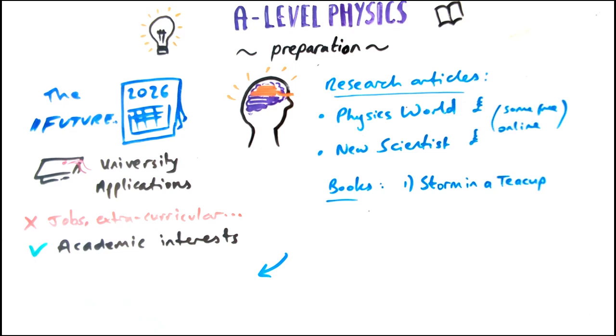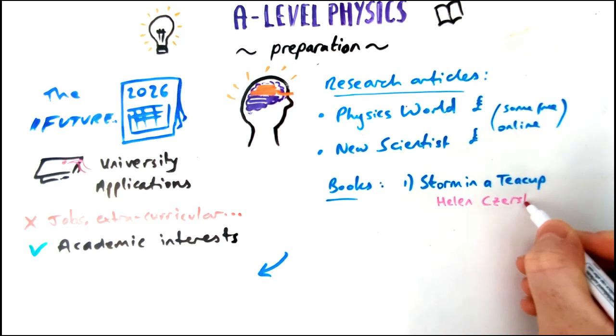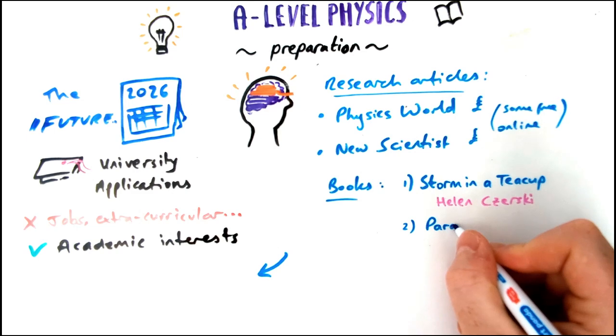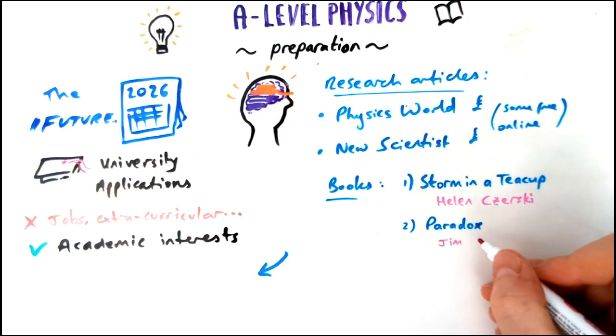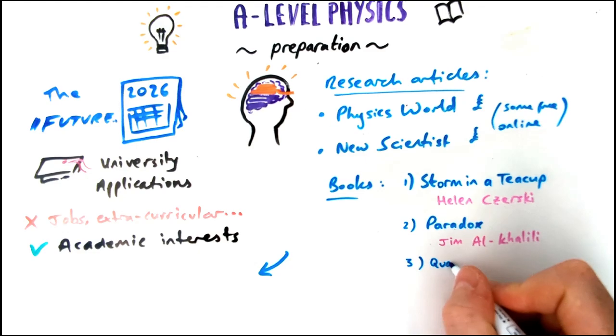In terms of books, there's Storm in a Teacup by Helen Czerski, which is kind of a general science book but it's fantastic and suitable for all levels really. I really like a book called Paradox, which is a really interesting book by Jim Al-Khalili. Lots of confounding physics theories in there.